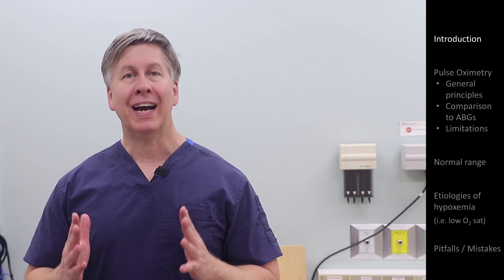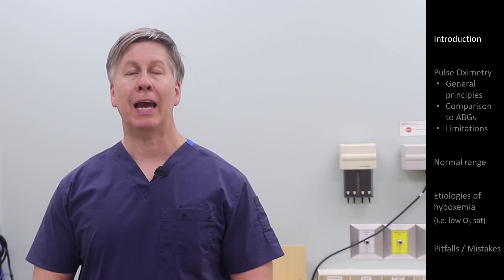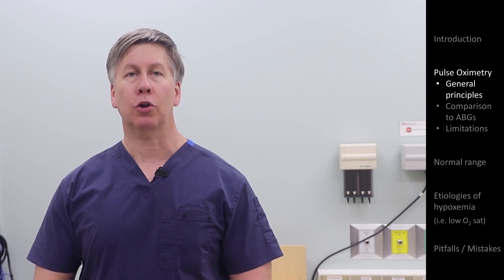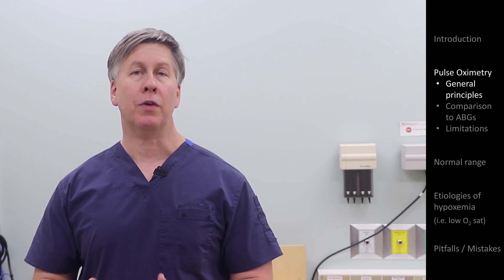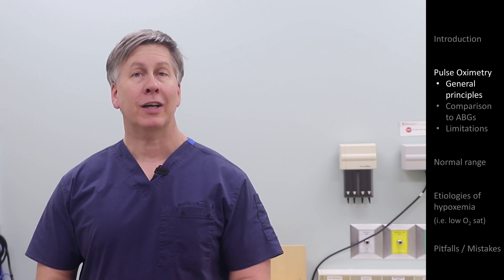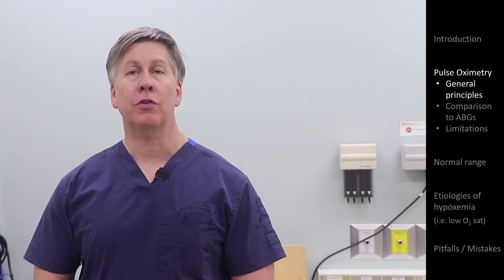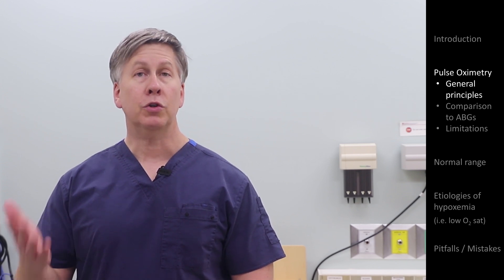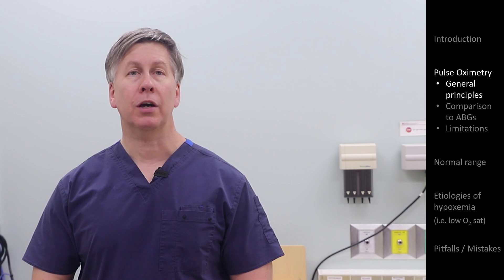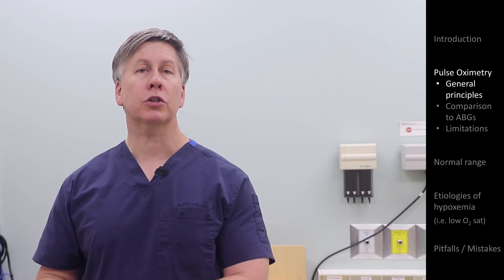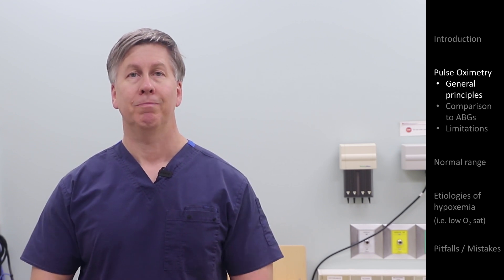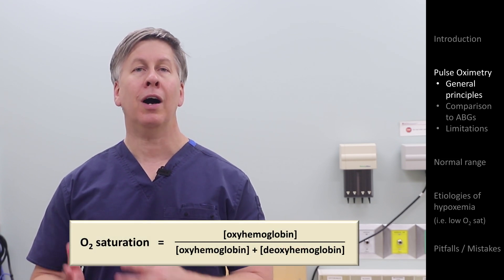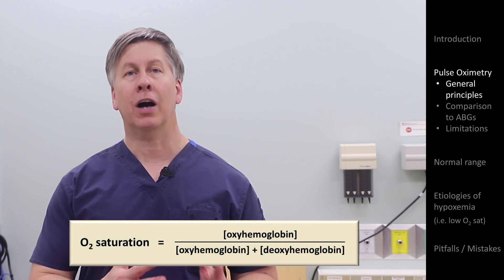To start off, what exactly is the O2 sat and pulse oximetry? O2 sat refers to the proportion of circulating hemoglobin that is saturated with oxygen. Unless otherwise specified, the term O2 sat implies the O2 sat in arterial blood. The higher the O2 sat, the greater the oxygen content in blood traveling from the heart to the peripheral tissues. It's calculated as the ratio of oxyhemoglobin to the sum of oxyhemoglobin and deoxyhemoglobin.